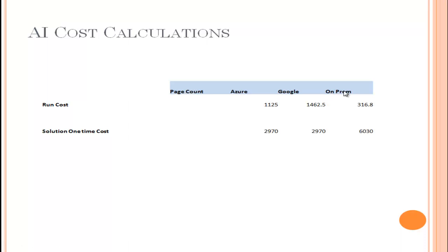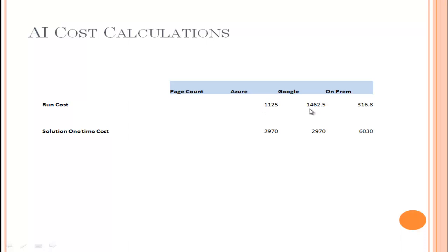The customer will ask: what is the one-time cost and how much do I need to spend? You present: if you use the Azure-based solution, the one-time customization cost is around $2,970; for Google it is similar; but for an on-prem solution you will spend around $6,000 one-time — almost double. However, for the run cost, Azure is approximately $1,100 per year, since Azure charges based on the number of documents. Google is a little more expensive at about $1.4K per year, but the on-prem run cost drops to around $316.